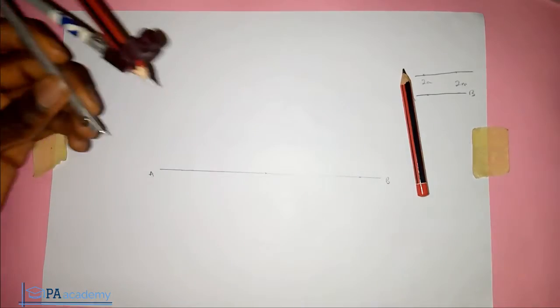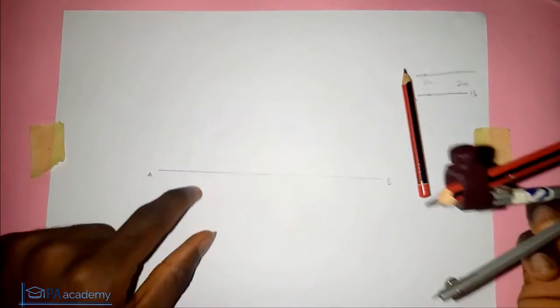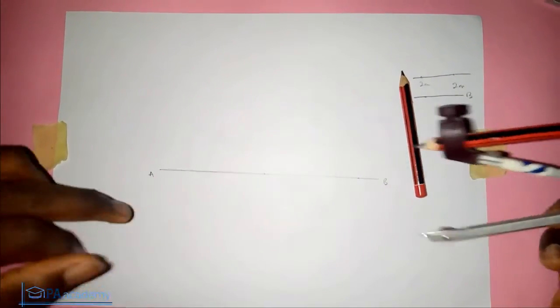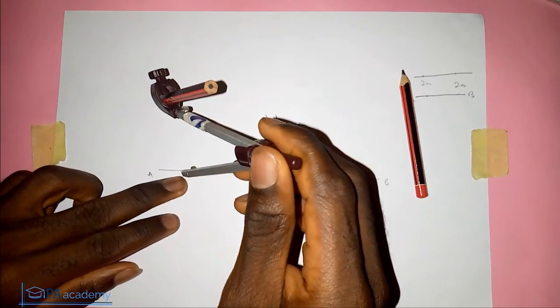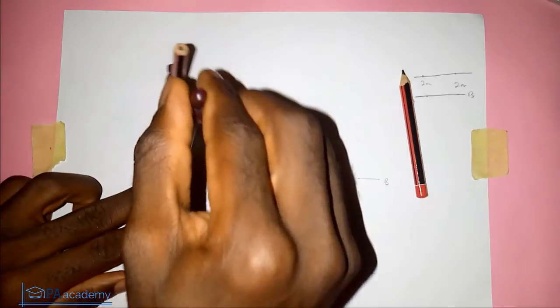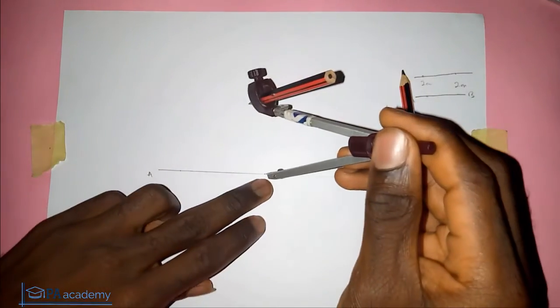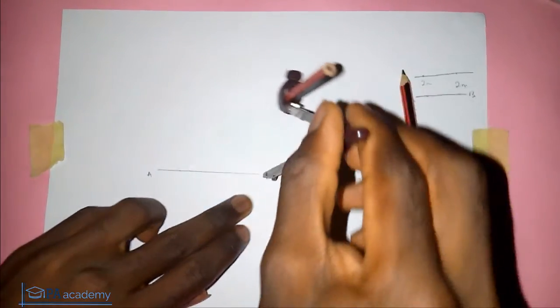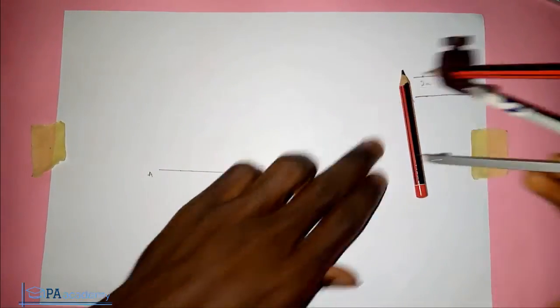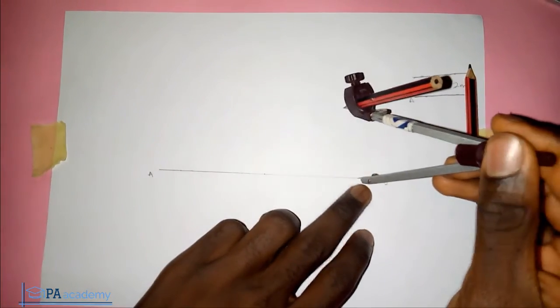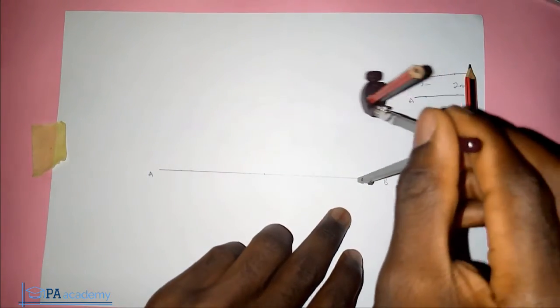So this is the five centimeters. From those three points that we picked on line AB, you draw an arc: this is the first one, second, and the third.